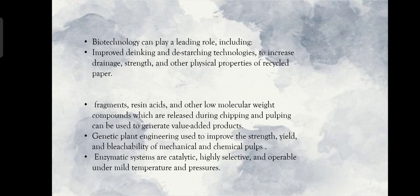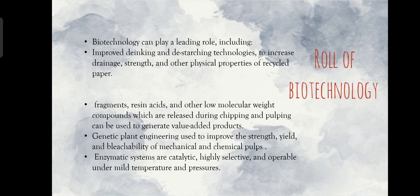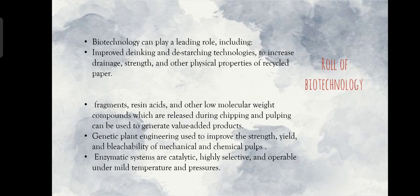Biotechnology can play a leading role in improved de-inking and de-starching technologies to increase drainage strength and other physical properties of recycled paper fragments. Resin acids and other low molecular weight compounds released during chipping and pulping can be used to generate value-added products. Genetic plant engineering can be used to improve the strength, yield, and bleachability of mechanical and chemical pulp.